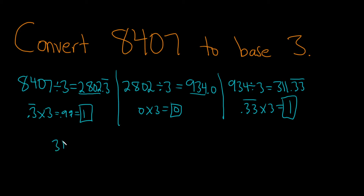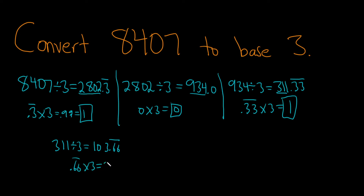Then you do it again. 311 divided by 3 — just keep taking this number, keep dividing by 3, and keep finding the remainder. So 311 divided by 3 is 103.66 repeating. You do 0.66 times 3 — I put 0.66 in my calculator, multiplied by 3, and got 1.98. So this is pretty much 2. You just round.